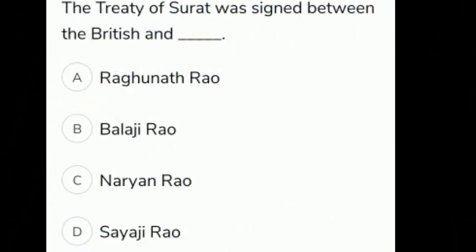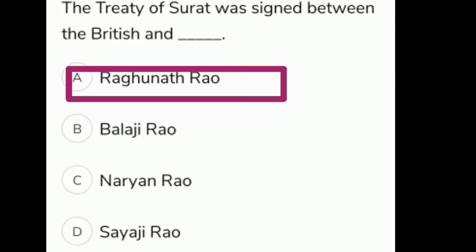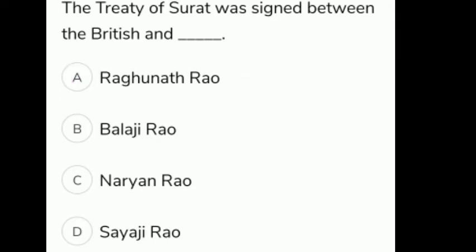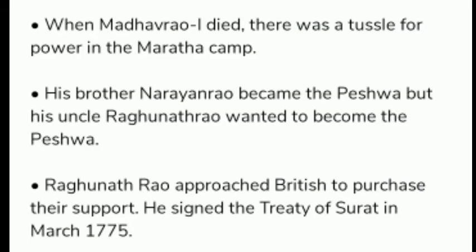The Treaty of Surat was signed between the British and whom? The given options are A Raghunath Rao, B Balaji Rao, C Narayan Rao, D Sayaji Rao. The correct answer is option A, Raghunath Rao. When Madhav Rao I died, there was a tussle for power in the Maratha camp. His brother Narayan Rao became the Peshwa, but his uncle Raghunath Rao wanted to become the Peshwa. Raghunath Rao approached the British to purchase their support and signed the Treaty of Surat in March 1775.